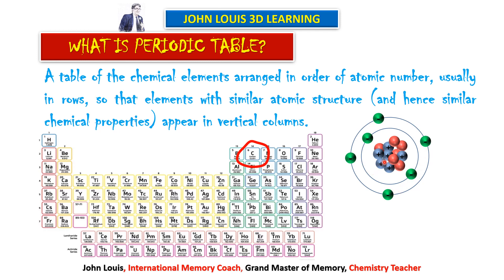Three different particles are present in an atom. You can remember them by saying PEN — P stands for proton, E stands for electron, and N stands for neutron. Protons are positively charged, neutrons are neutral with no charge, and electrons are negatively charged.